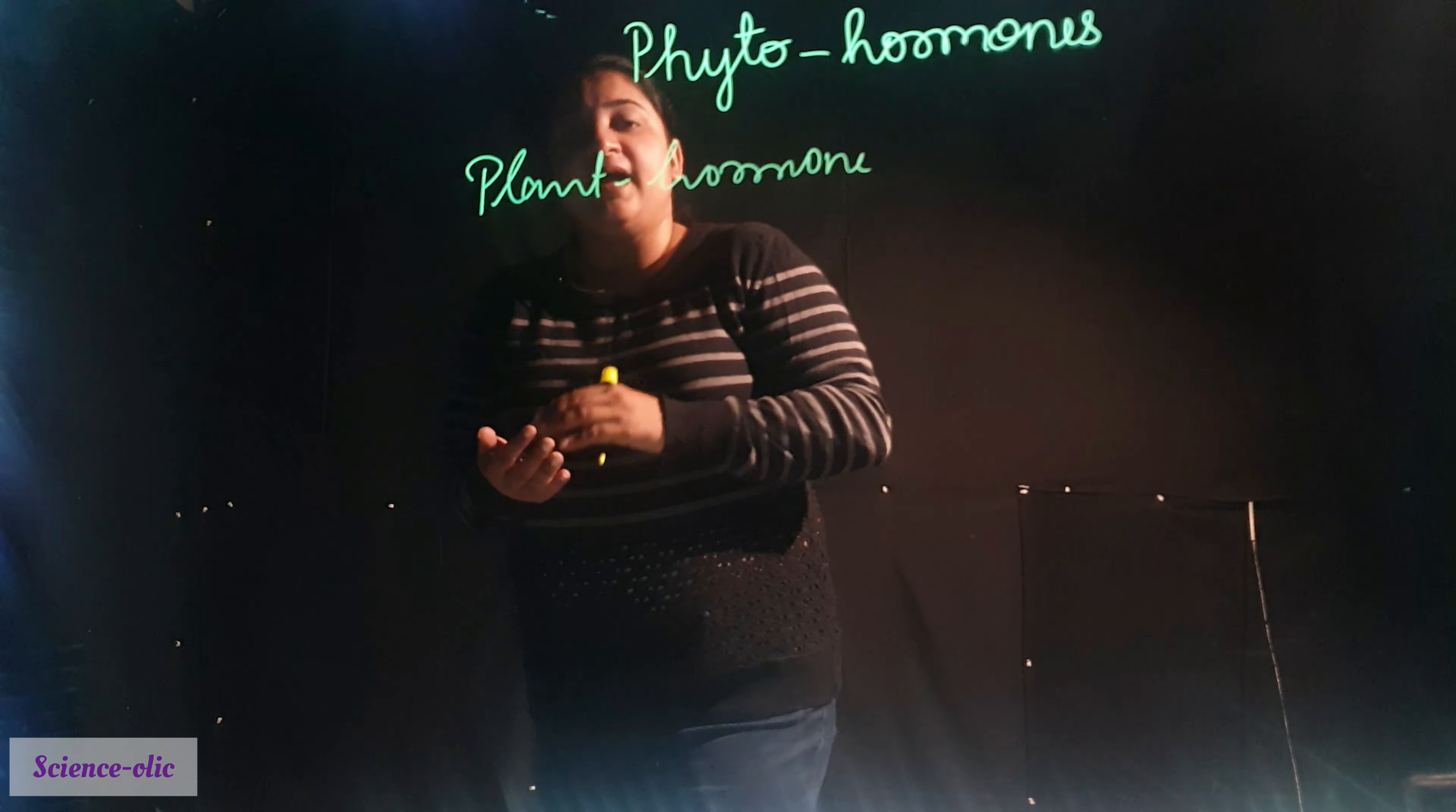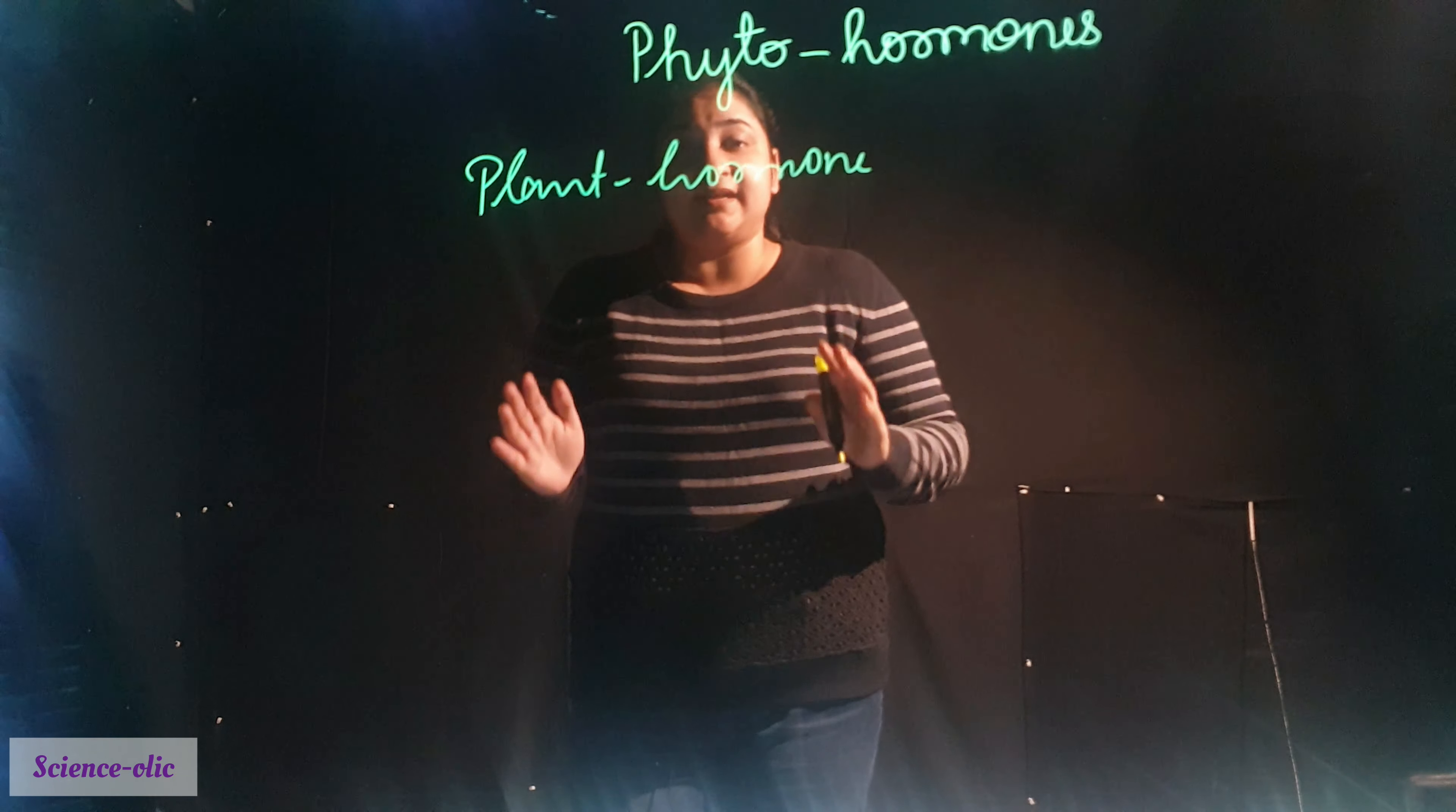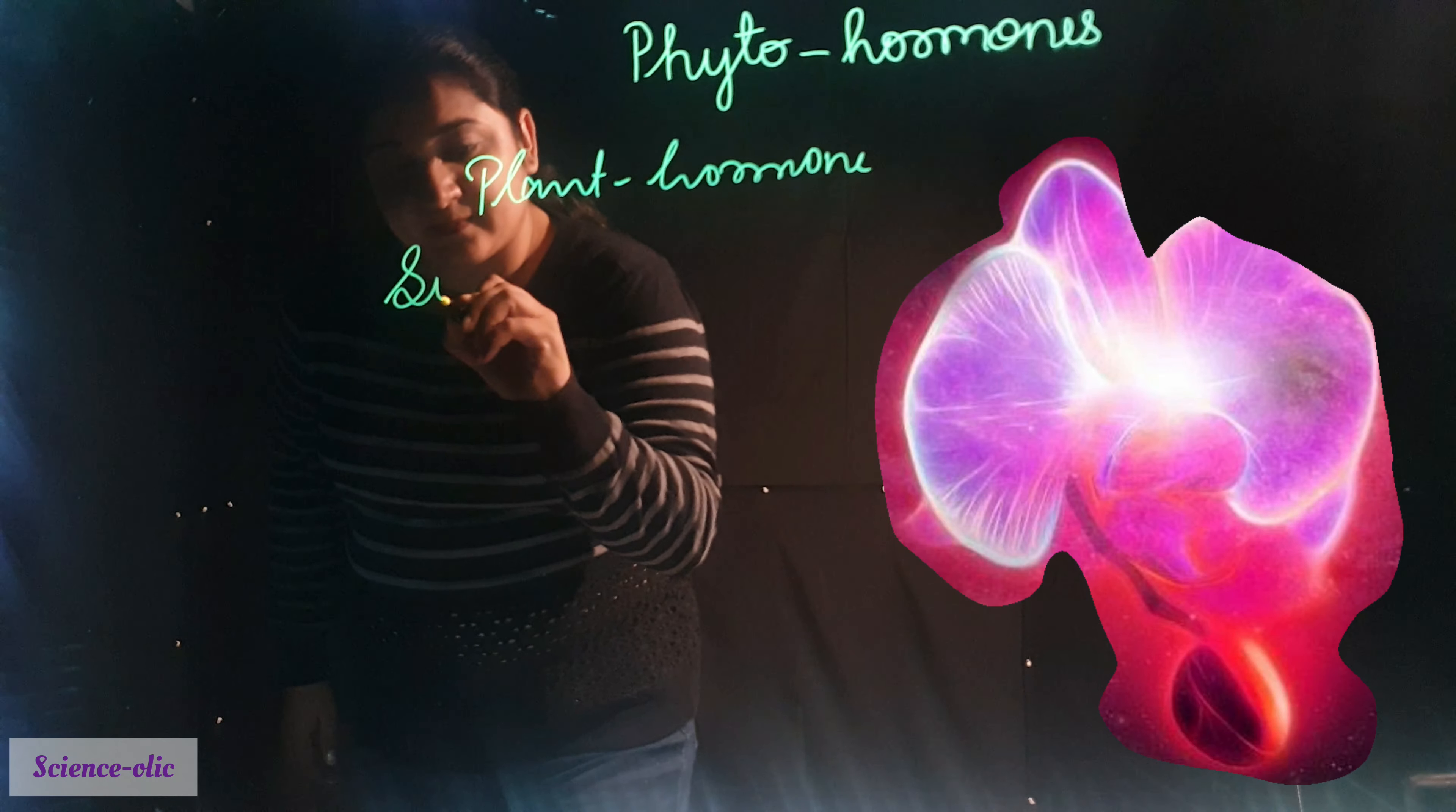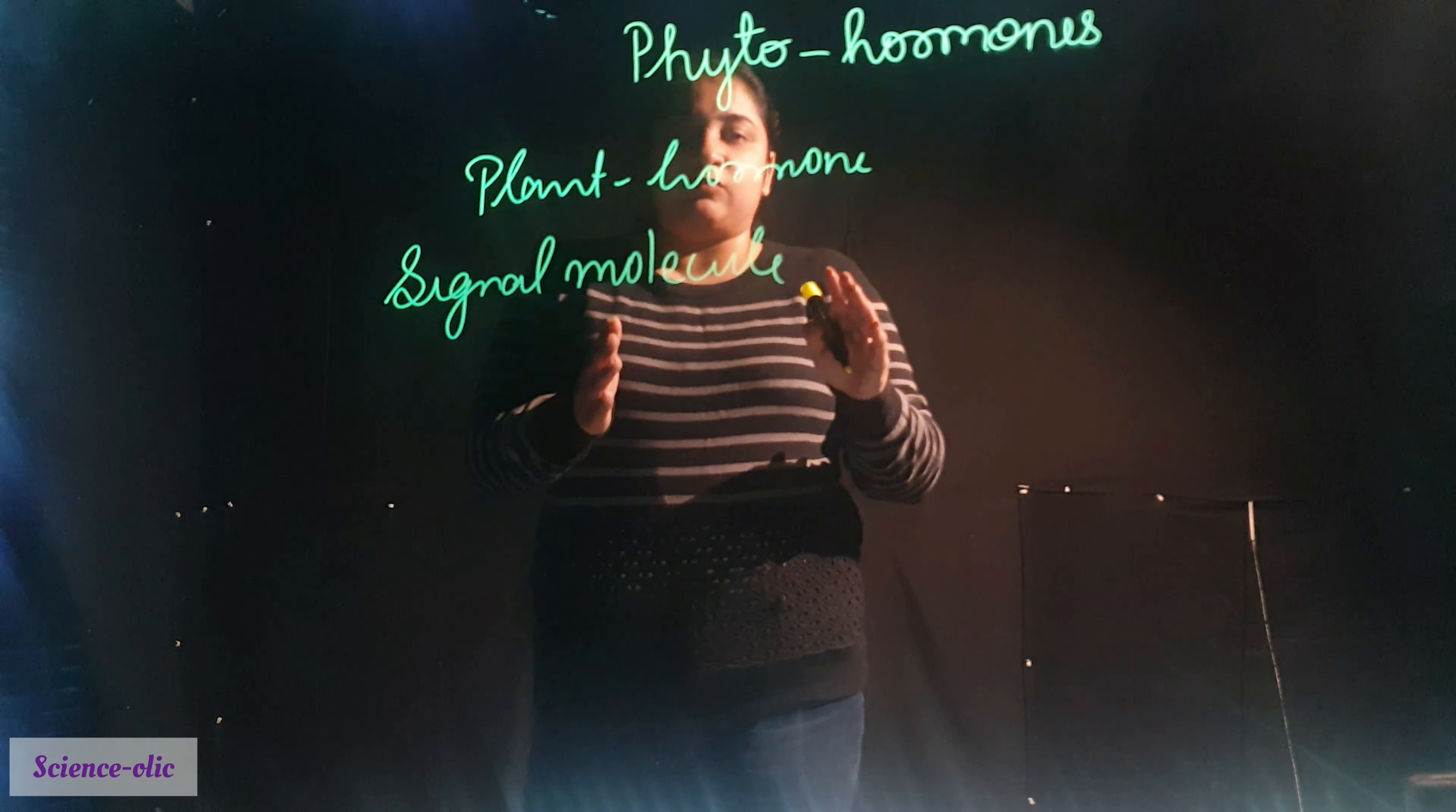We have studied the animal hormones. Now we are going to discuss the plant hormones. They are different types of hormones that work in plants. They are signal molecules. Now let's see different types of hormones.